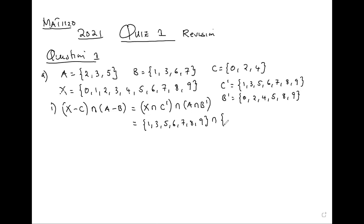Intersection A intersection B complement. A intersection B complement is what is in B complement that is also in A. We have 2 in both sets, and 5 in both sets. So A intersection B complement gives us {2, 5}. What is common between {1, 3, 5, 6, 7, 8, 9} and {2, 5}? Only 5.